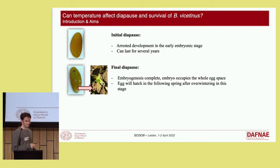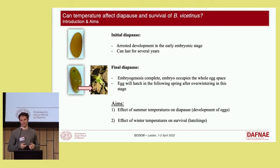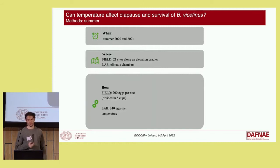Our aim was to test the effect of summer temperatures on egg development, because egg development occurs during the warm period — during summer — and also to test the effect of winter temperatures on survival, meaning on hatchings in the spring. To address these questions, we carried out two different experiments, one during the summer and one during the winter. Here in this table, I summarize the methodology for the summer experiment.